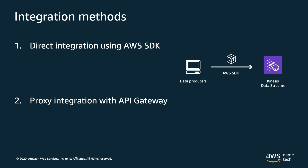What option two looks like, on the other hand, is a proxy API that sits in between your data producers and your backend services. Your data producers send data to API Gateway with an HTTP post, which triggers a Lambda function on the backend that executes AWS SDK code to send data to Kinesis. This provides an extra layer of security to separate your backend resources away from game clients. However, both of these methods can be used for cross-platform game releases, including mobile, PC, and console games — you just need to decide what's best for your game and your company.